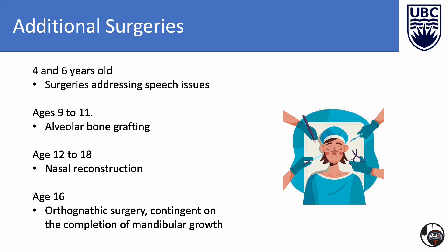Further surgical interventions may be necessary following the initial lip and palate repair. Surgeries addressing speech issues stemming from velopharyngeal insufficiency are typically performed when the child is between 4 and 6 years old. Alveolar bone grafting is scheduled for ages 9 to 11. Nasal reconstruction can be optimally carried out between the ages of 12 and 18. Orthognathic surgery, which is contingent on the completion of mandibular growth, is generally considered appropriate for individuals over the age of 16.